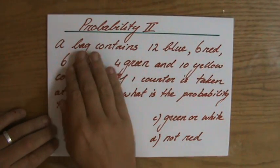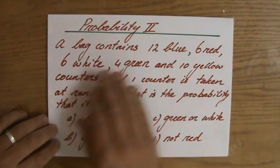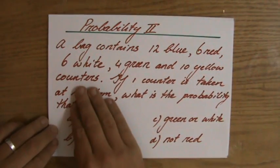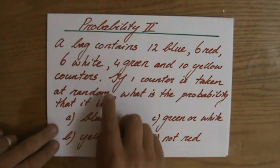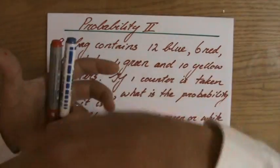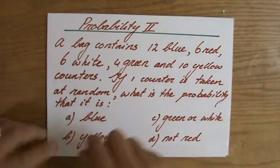My handwriting for some of you is a bit difficult to read, so don't worry, listen carefully. It says a bag contains 12 blue, 6 red, 6 white, 4 green, and 10 yellow counters. It's a lot of counters in this bag. And if I take one counter out at random, I close my eyes and I look the other way and I take this counter out.